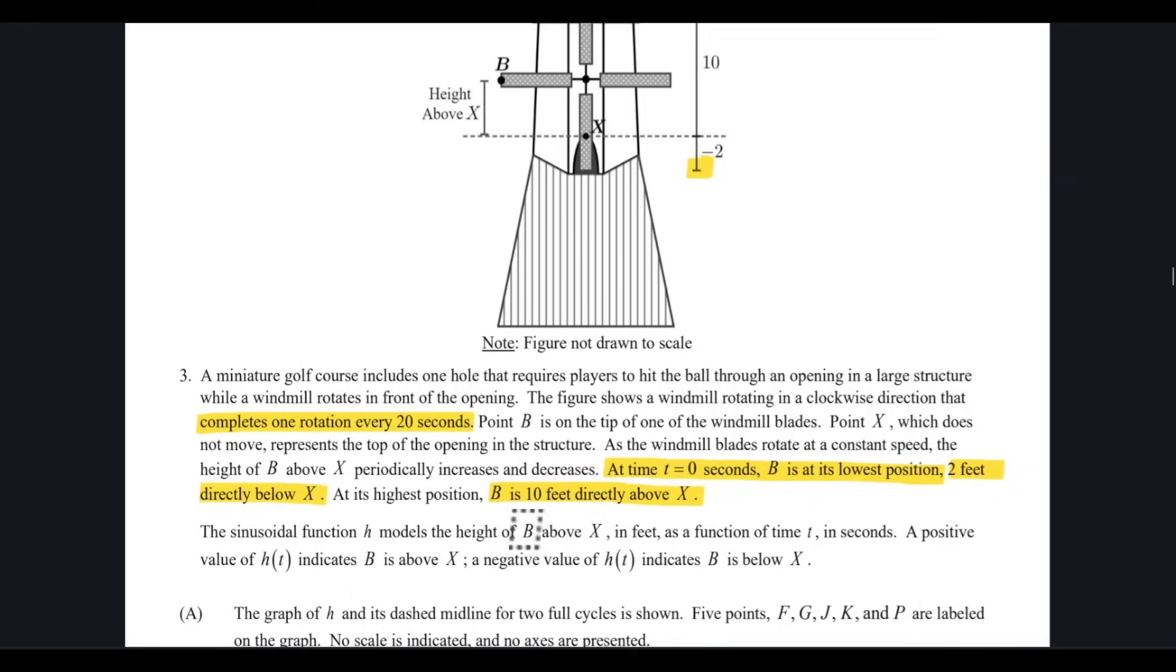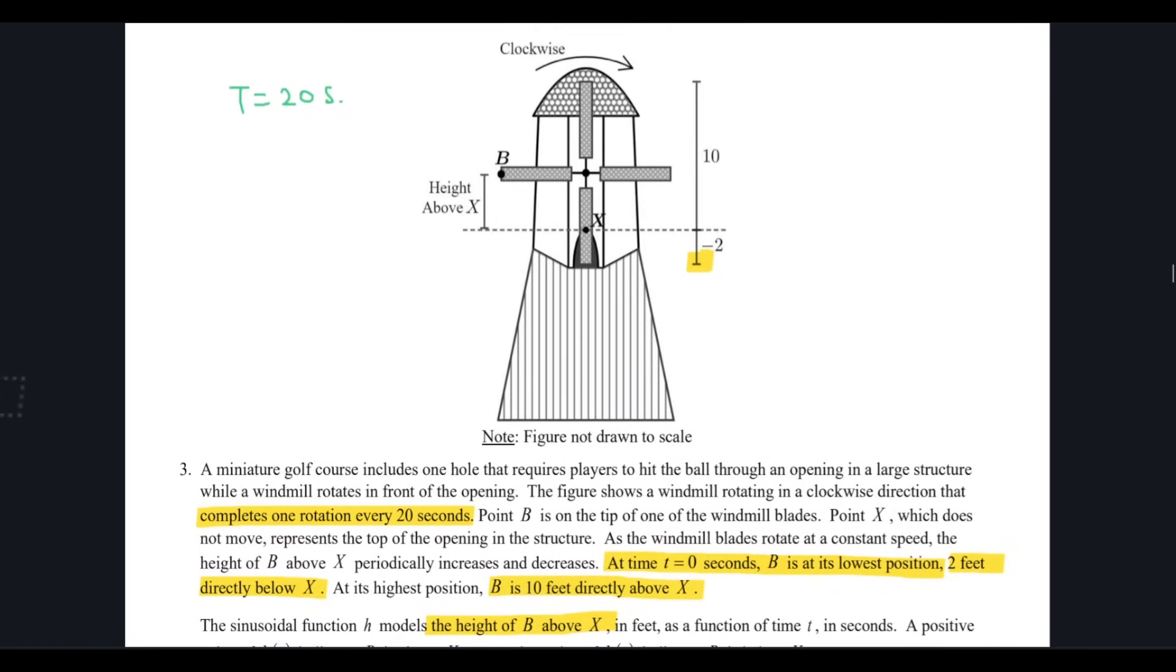Now the sinusoidal function models the height of B above x, and a positive value of h indicates that B is above x, and negative value is B below x. So I hope you understand the question.